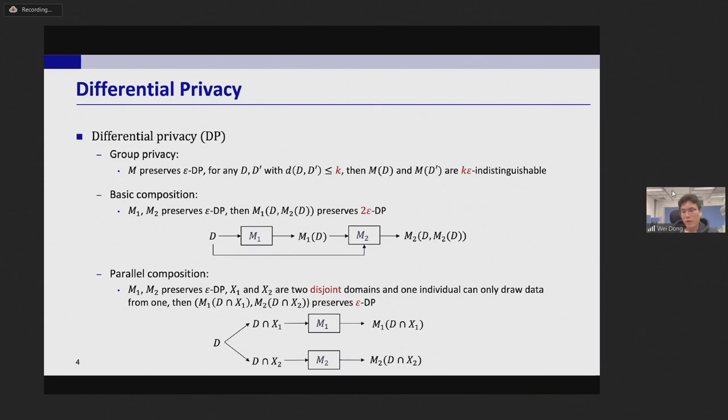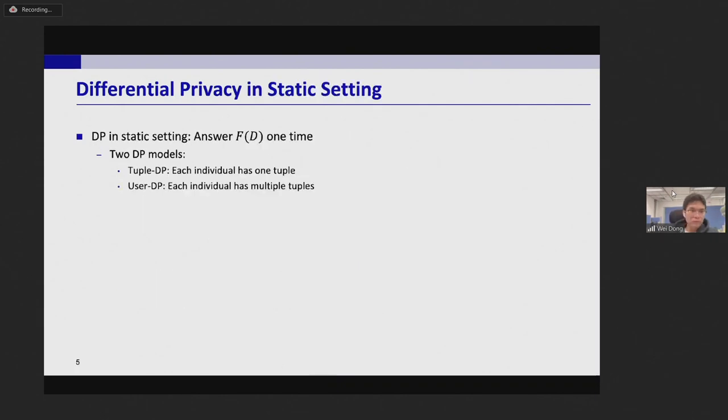So far most DP works consider a static setting where the input is a static dataset and we answer the query one time. And there are two DP models. The first one is called tuple-DP. Here each individual corresponds to one tuple and we protect the privacy of tuples. The second one is user-DP. Here each user corresponds to multiple tuples and we protect the privacy of users.